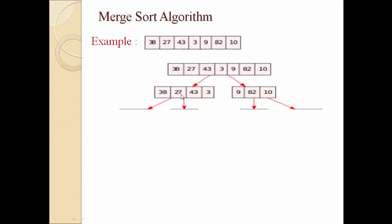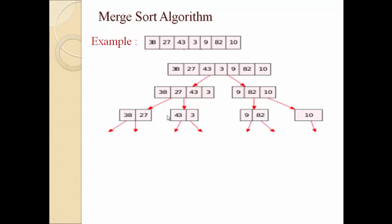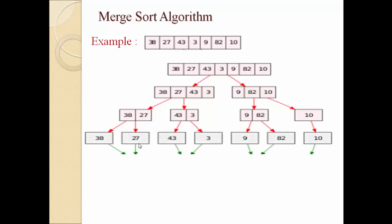Four elements are in the left part and three elements are in the right part. We can divide the left as well as right part again because we have more than one element. The first part will have 38 and 27, and the second part will have 43 and 3. On the right side, we divide again: first part will have 9 and 82, and the second part will have 10. Now 38 will be in the left part and 27 in the right part; likewise 43 in the left and 3 in the right, and 9 will be left and 82 will be right.